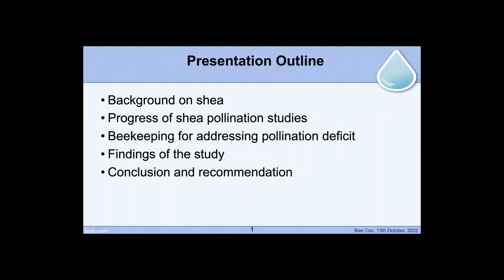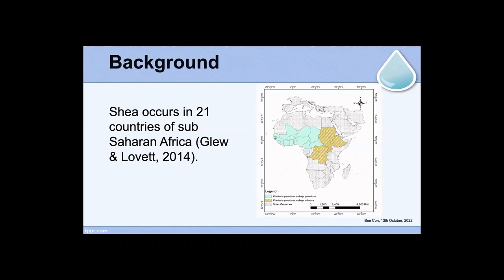We're looking at the background of Shea, the progress of Shea pollination studies so far, beekeeping for addressing pollination deficits, and we'll look at the findings of this study and conclude. Shea is a very economic tree occurring in the West Africa sub-region. The area covers two subspecies: the green is subspecies paradoxa and the yellow is nilotica — two subspecies of Vitellaria paradoxa.